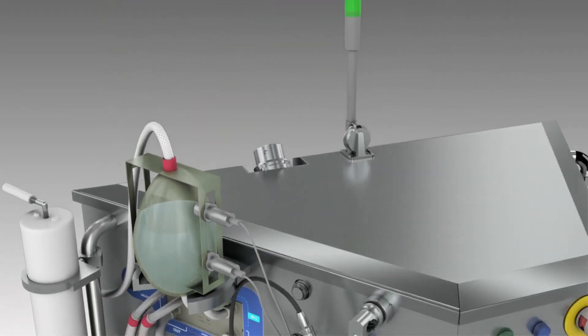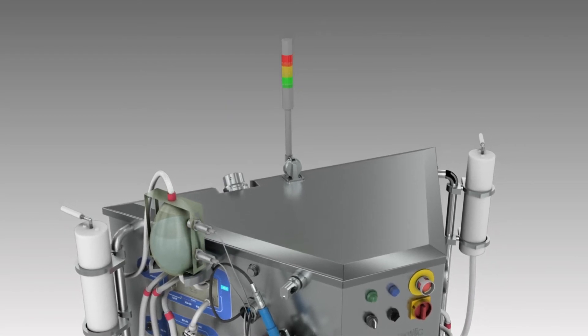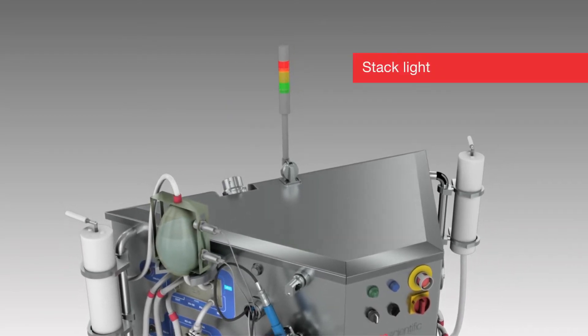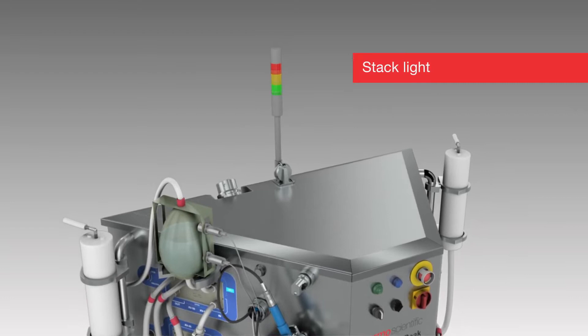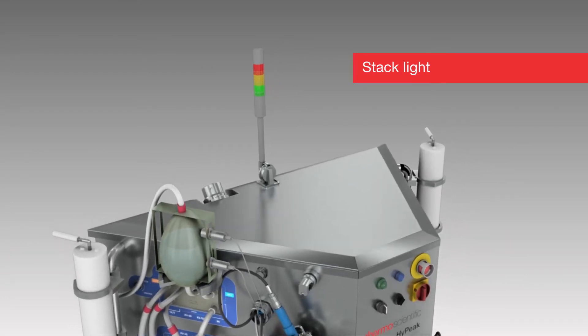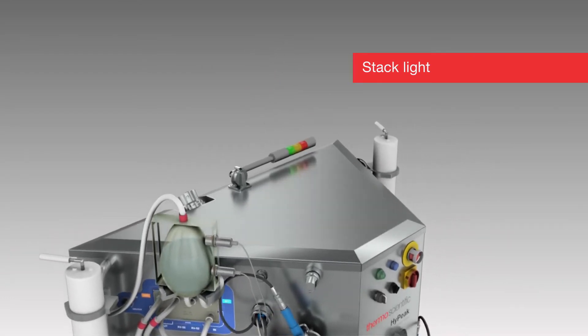Status of the High Peak System can easily be identified at a distance via the stack light. For visibility, the stack light is positioned on top of the High Peak System, but can easily be flipped down for system portability.